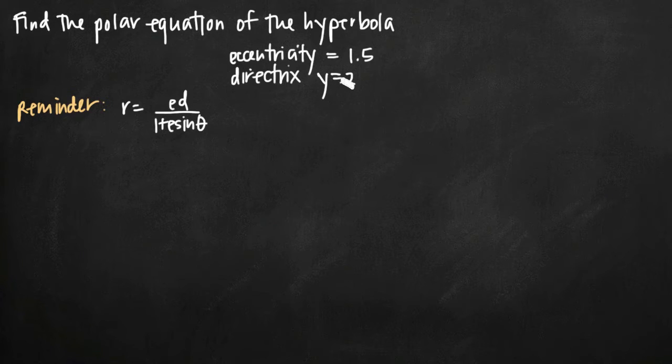But if you have anything other than y equals a positive constant—for example, if you have y equals a negative constant or if you have x equals a positive constant or x equals a negative constant as the equation of the directrix—then in each case the formula for the equation of the hyperbola will be different. So this formula only applies to y equals a positive constant.